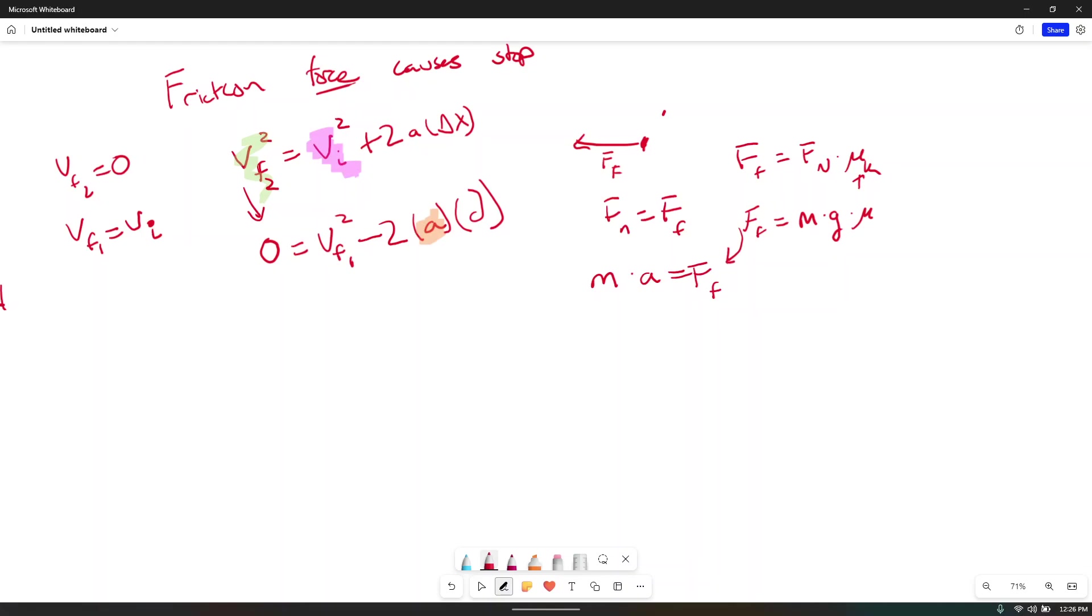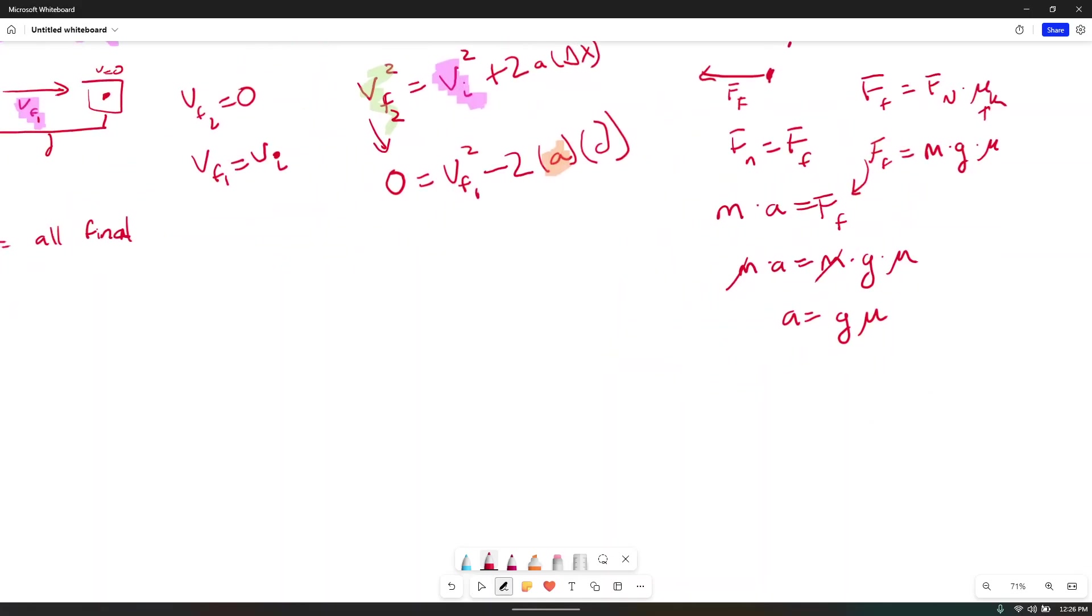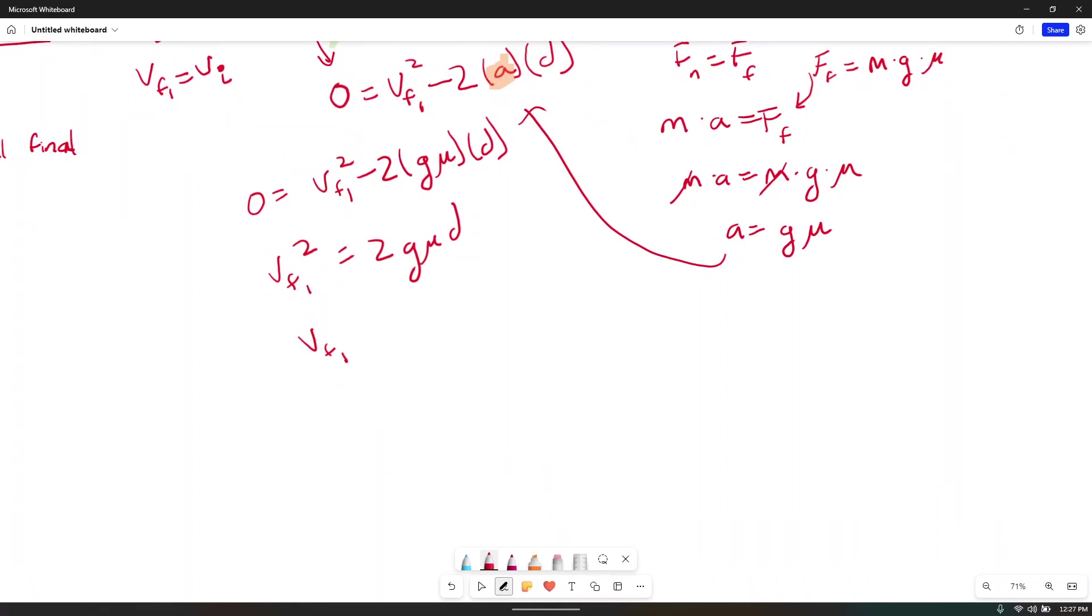We don't have to define mu k because in our question, they didn't specify mu k versus mu s, so we only use standard mu. Now this is a lot, right? But what then we can then do is put that into there, so mass times acceleration is equal to mass times gravity times mu. Mass, mass cancel, acceleration is equal to gravity times mu. Now what we can then do is plug all that in over there. Zero equals velocity final one squared minus two times gravity times mu times distance. We're going to add this entire term over to the other side and get velocity final one squared is equal to two g mu d. Then we do velocity final one is equal to the square root of two g mu d. Are we done?